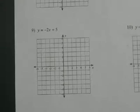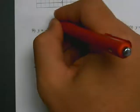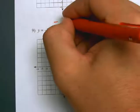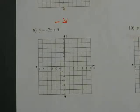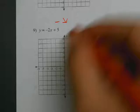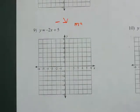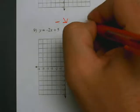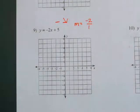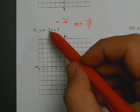Looking at number 9. First step, we ask ourselves: is the slope positive or negative? The slope is negative, so we put a negative, which means a line going down from left to right. Then I write my slope as a fraction. m equals negative 2 — but how do I write negative 2 as a fraction? Put it over 1, so negative 2 over 1. How do you write any number as a fraction? You put it over 1.